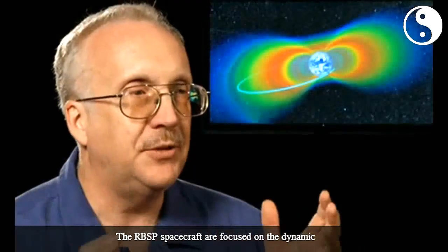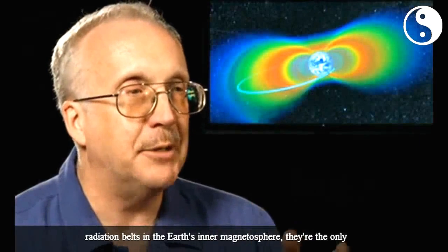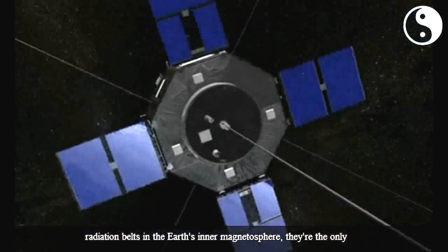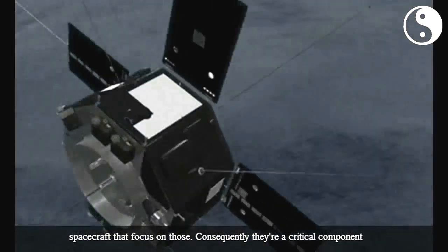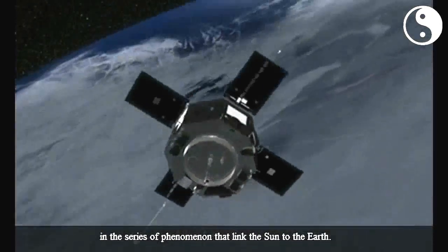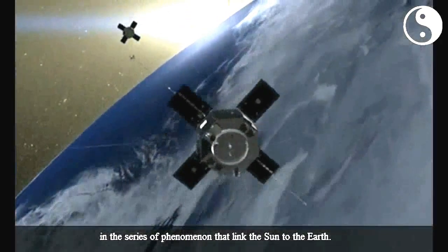The RBSP spacecraft are focused on the dynamic radiation belts in the Earth's inner magnetosphere. They're the only spacecraft that focus on those. Consequently, they're a critical component in the series of phenomena that link the sun to the Earth.